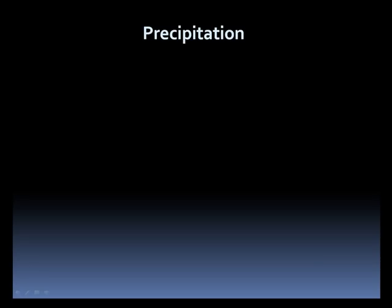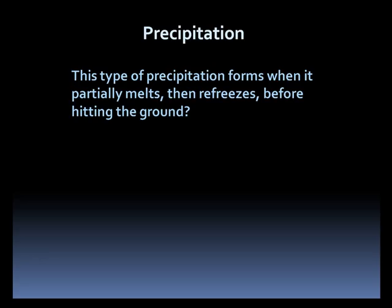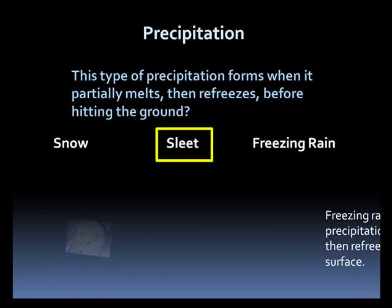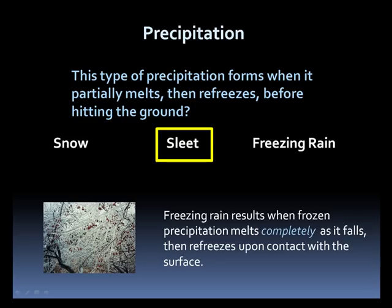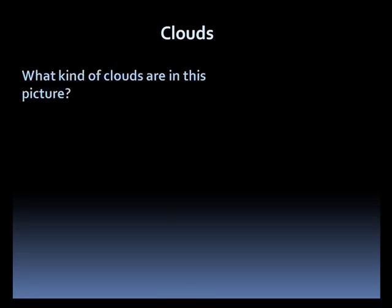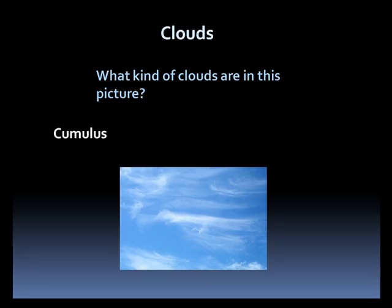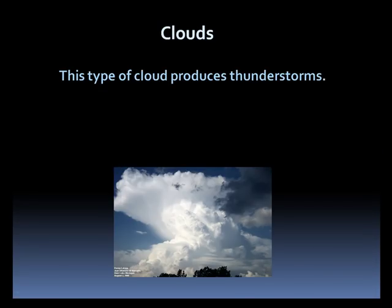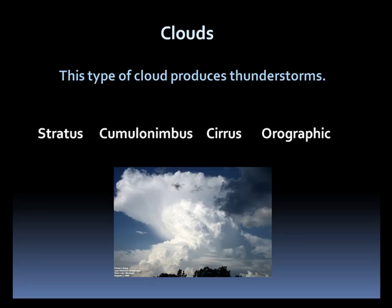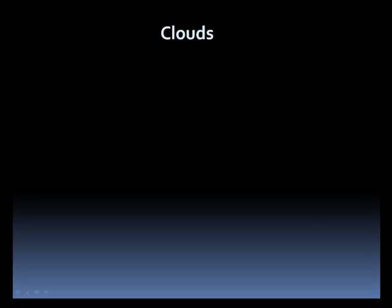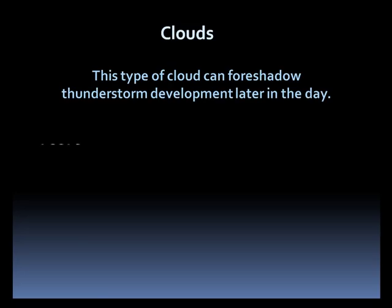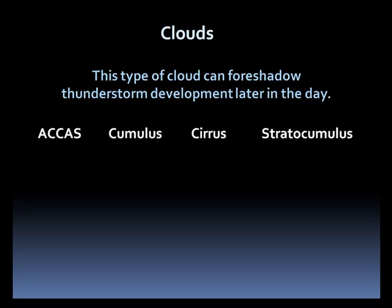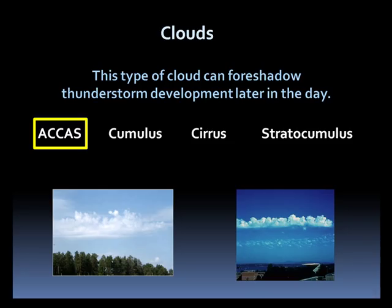Let's try some other questions. This type of precipitation forms when it partially melts as it falls and then refreezes before hitting the ground. Is it snow, sleet, or freezing rain? The answer is sleet. Freezing rain is similar, but it develops when frozen precipitation melts completely then freezes on contact with the ground. What type of clouds are in this picture? Are they cumulus, stratus, or cirrus? If you said cirrus, you are correct. How about this cloud — it produces thunderstorms. Is it stratus, cumulonimbus, cirrus, or orographic? This is an example of a cumulonimbus cloud. This type of cloud can foreshadow thunderstorm development later in the day. Are they ACCAS, cumulus, cirrus, or stratocumulus? These are ACCAS clouds, which is short for altocumulus castellanus. These clouds point to instability in the atmosphere that can lead to thunderstorm development.